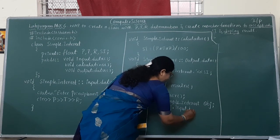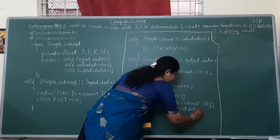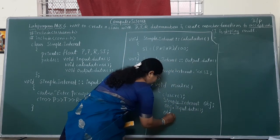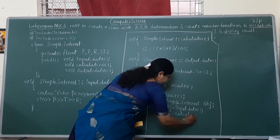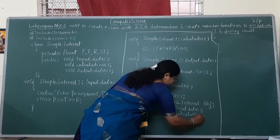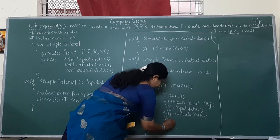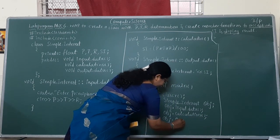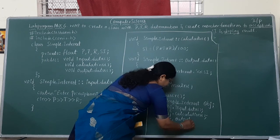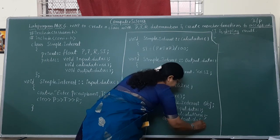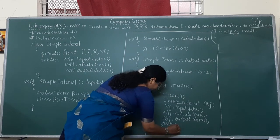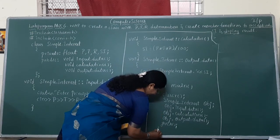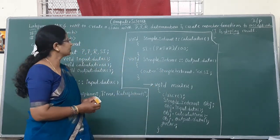Invoking the function calls: if we are invoking a function using the object name, member operator — that is your dot operator — along with the function name. So: obj.input_data(); then obj.calculation(); then obj.output_data(). Then getch() — to hold the immediate output on screen we use getch().